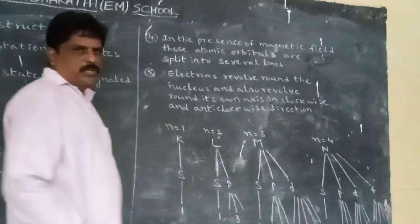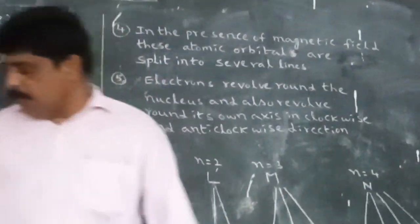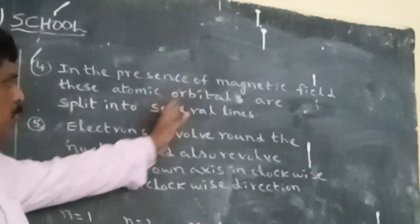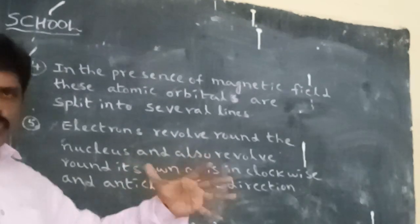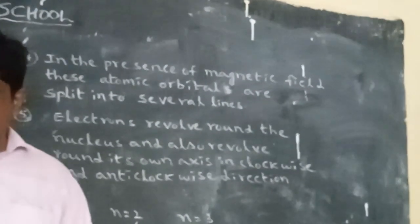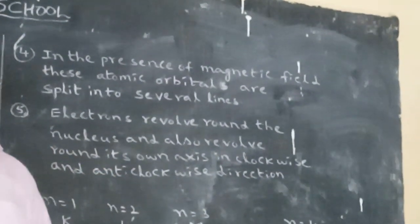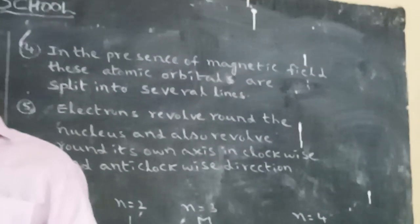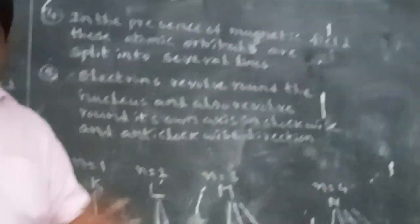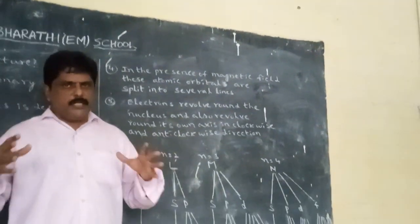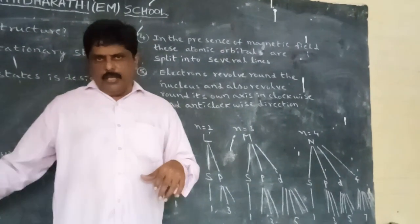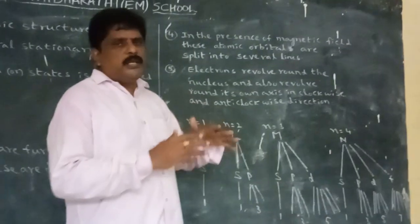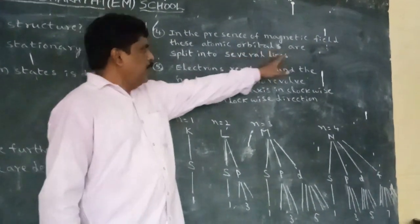In the presence of a magnetic field, these atomic orbitals are split into several lines. The stationary states are divided into atomic orbitals, and in the presence of a magnetic field around the atomic orbitals, these are further subdivided into several lines.